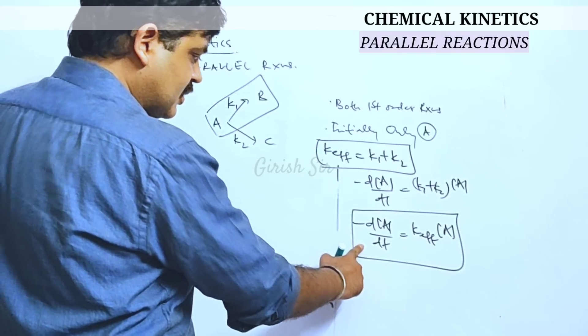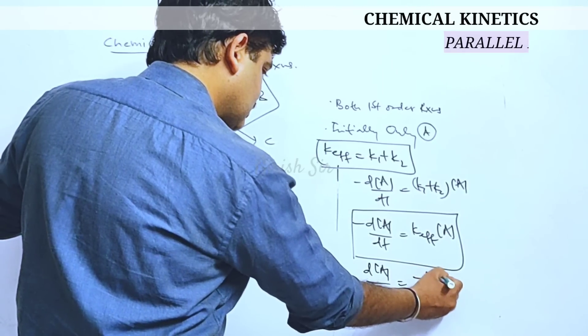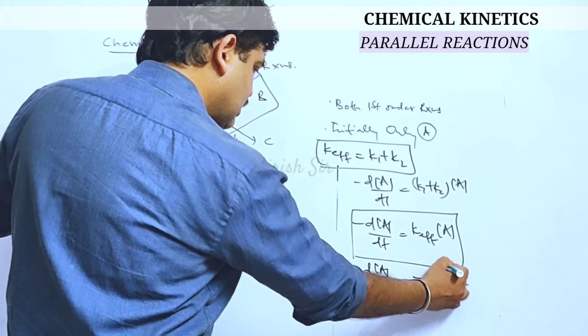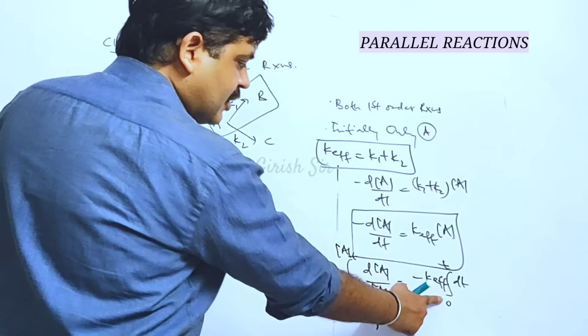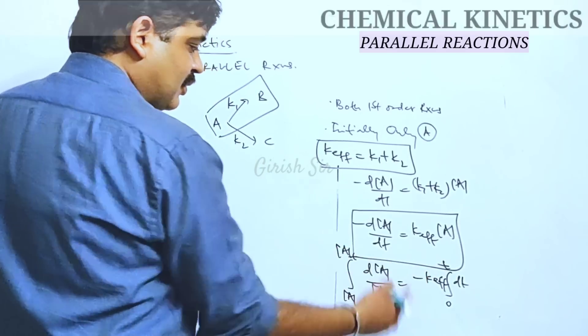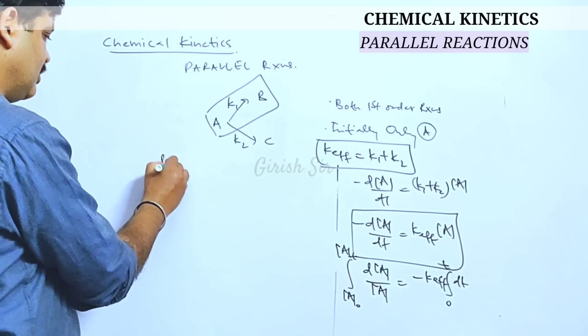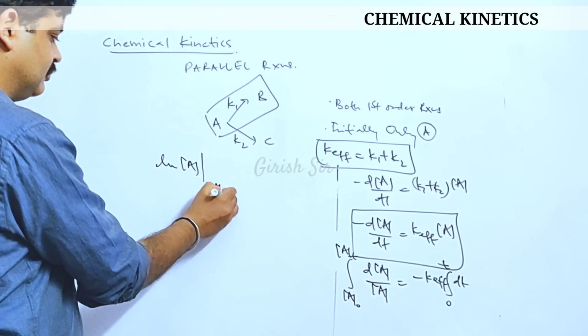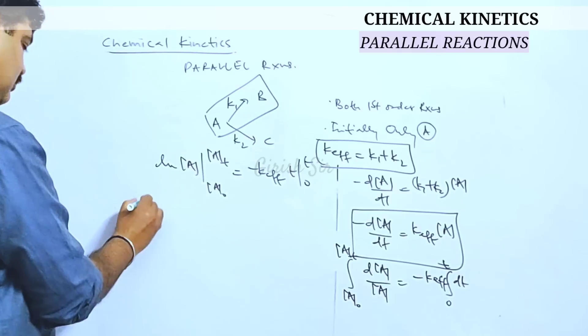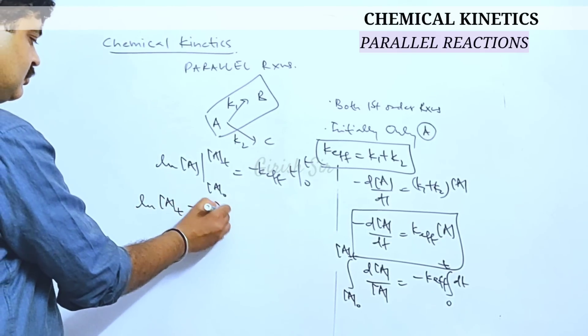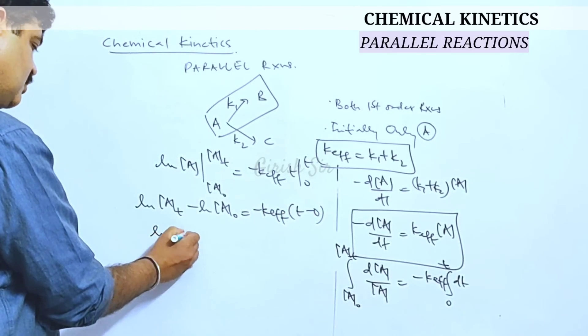If we integrate this equation, we write it like this and integrate between the time interval 0 and t. These are the two time instances at t equals 0 reaction starts and after some time t, how the concentration of A would be, we should be able to get after integration. So if we integrate, we will be getting...